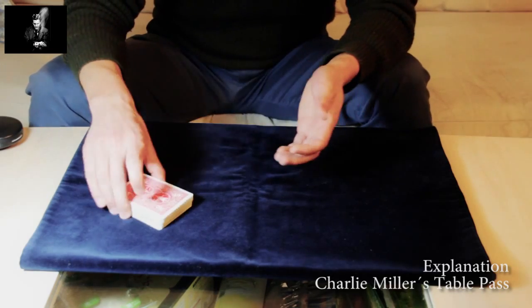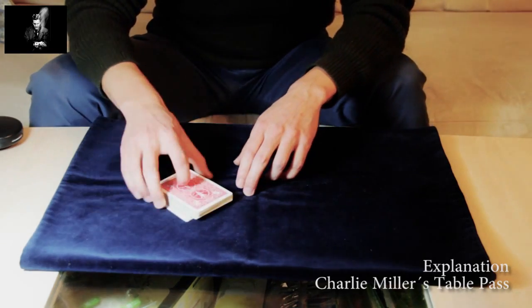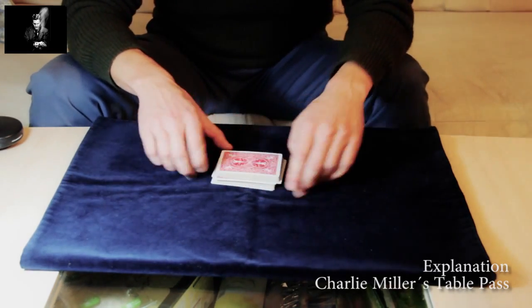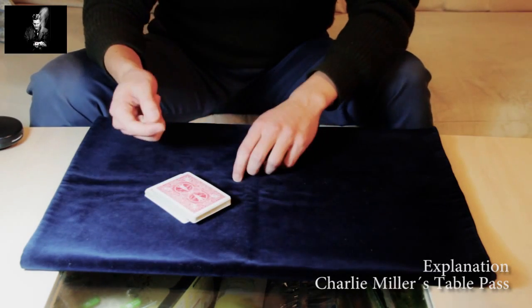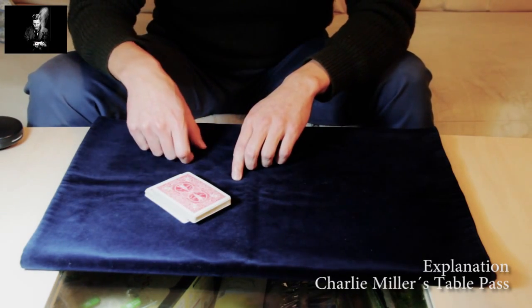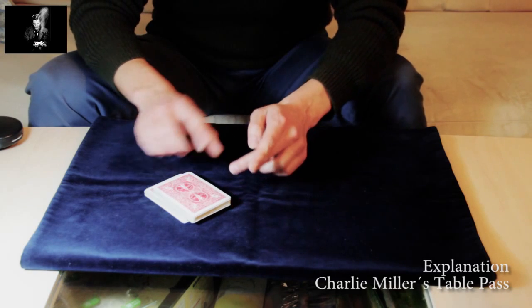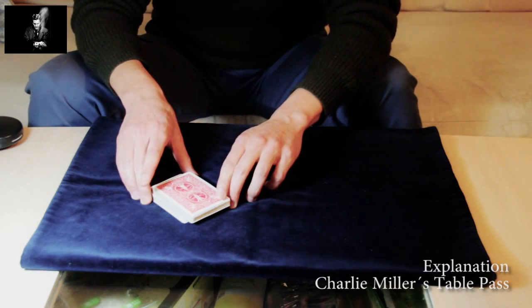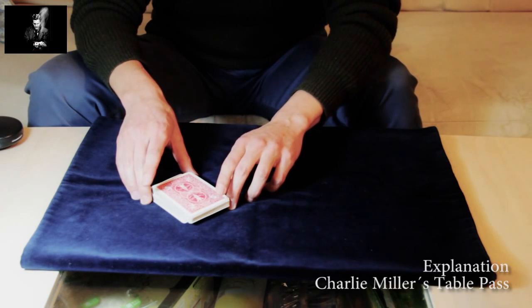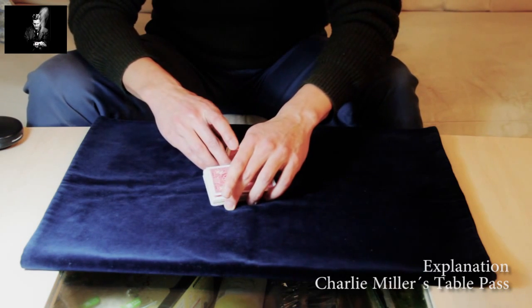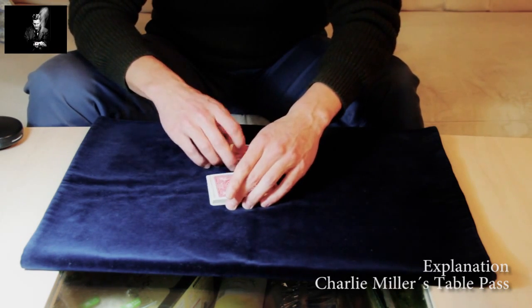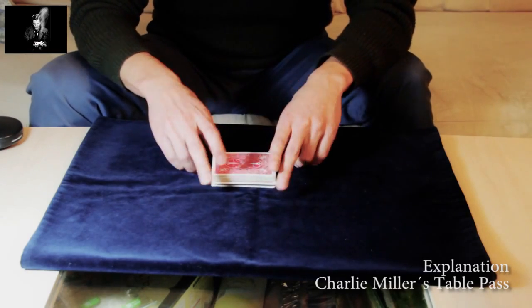The mechanic itself is very effective and very easy to learn. Just don't forget: outjog, then use your middle finger as the pivot point and pinch down with your fourth finger, because when you don't pinch down, then this turning of this packet will be a little bit more difficult.